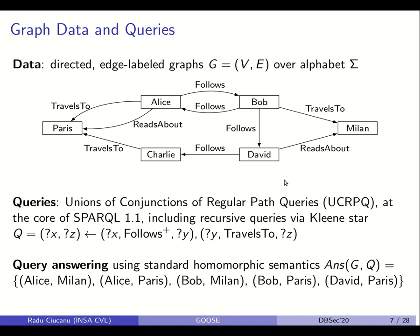As data, we consider directed edge-labeled graphs. Formally, a graph G consists of two sets V and E. V is the set of nodes — in this example we have six nodes: four correspond to people (Alice, Bob, Charlie, David) and two to cities (Paris, Milan). Edges are defined over an alphabet sigma of labels: follows, reads about, travels to. An edge is a triple of subject (a node), predicate (an edge label), and object (another node). This formalization can capture, for example, RDF graphs.